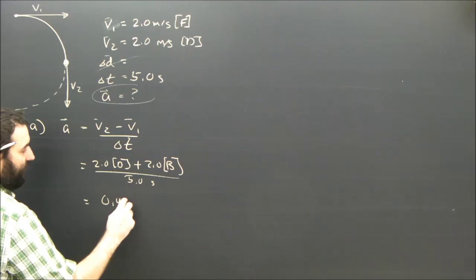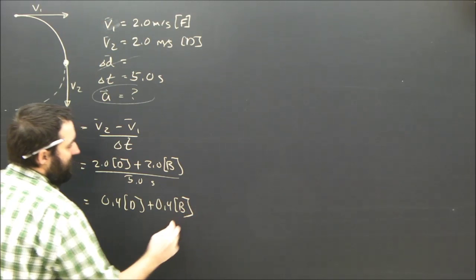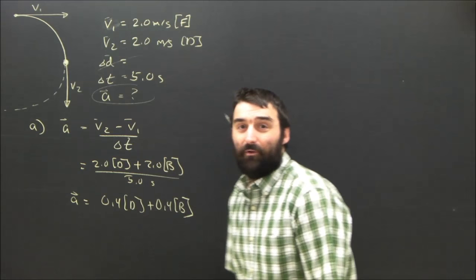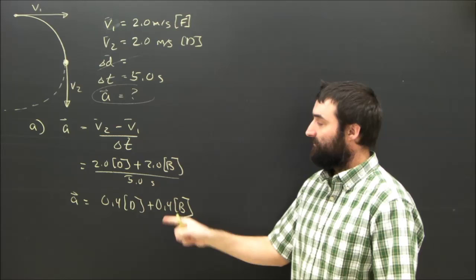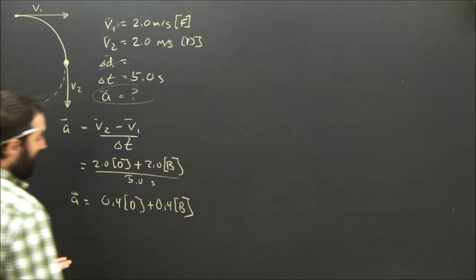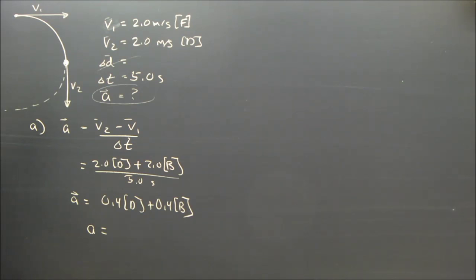So I'm going to end up with 0.4 down plus 0.4 backwards meters per second squared. The units have already worked out, and I was being a little lazy. I left out my units, but it would be meters per second divided by seconds, meters per second squared. Okay, so this is actually really easy, right? If we have 0.4 down and 0.4 backwards, what's our acceleration? Well, it's just a little Pythagorean theorem. I'll just do a little diagram here.